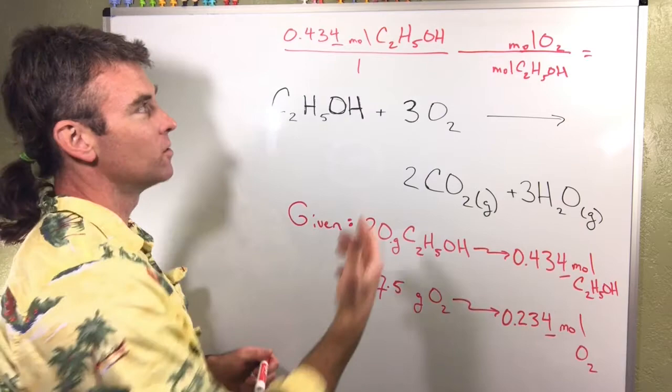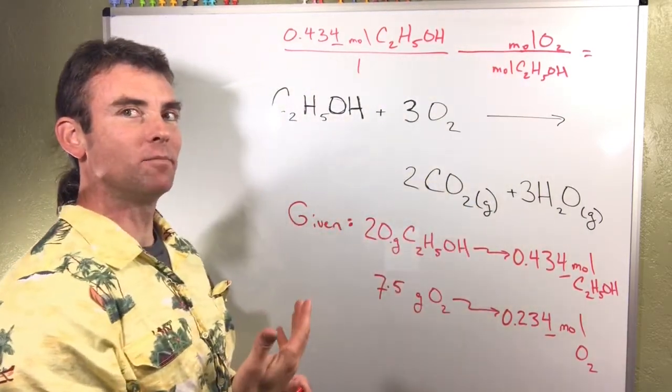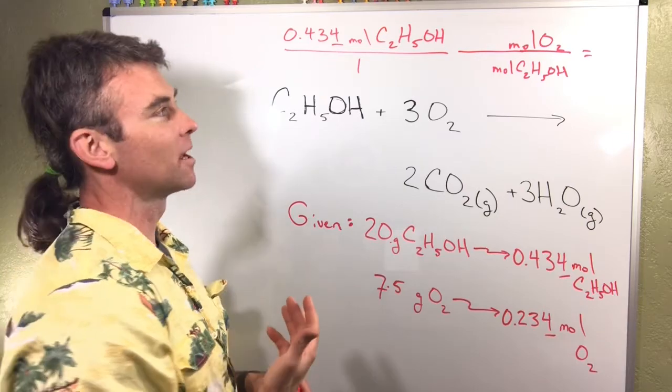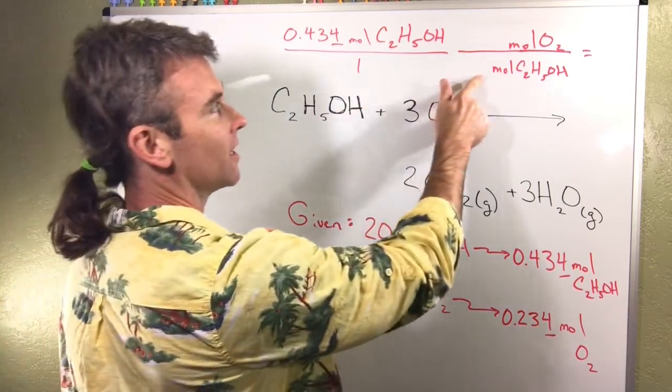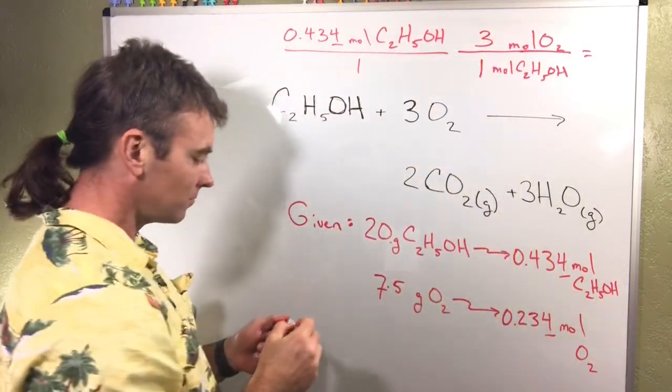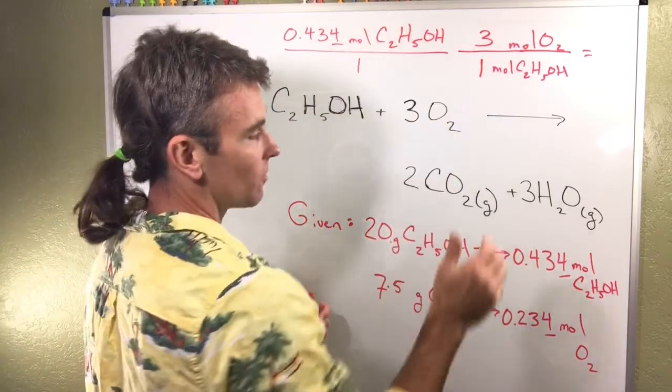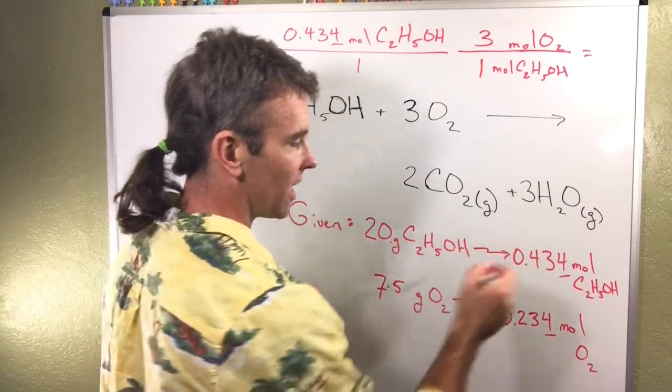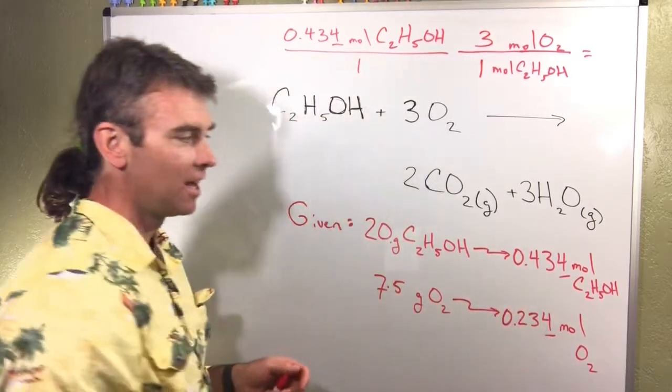The real question is what number goes where? This is a mole over mole situation so I have to look at my balanced chemical reaction. The one goes with this unit, the three goes here. I'm going to do that number times three, and we'll compare both numbers.